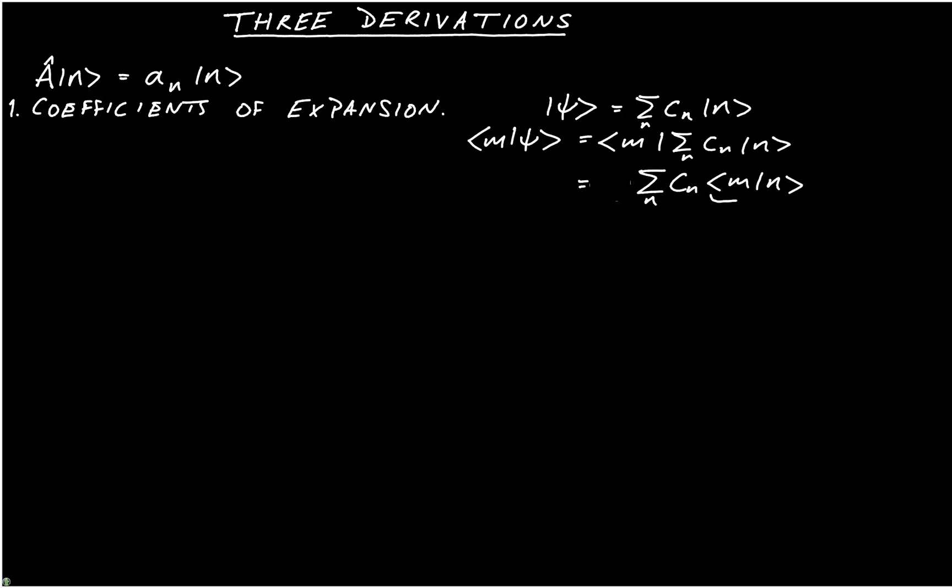As ⟨m|n⟩ is equal to δ_mn, when we do the sum over n, only n equals m survives.